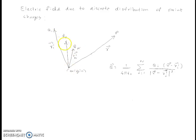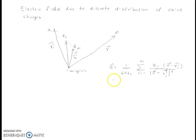These point charges are located at r1 dash, r2 dash, and rn dash. The field at point P, given by the vector r, due to these charges q1 to qn is given by this expression. This is obtained by using the principle of superposition.